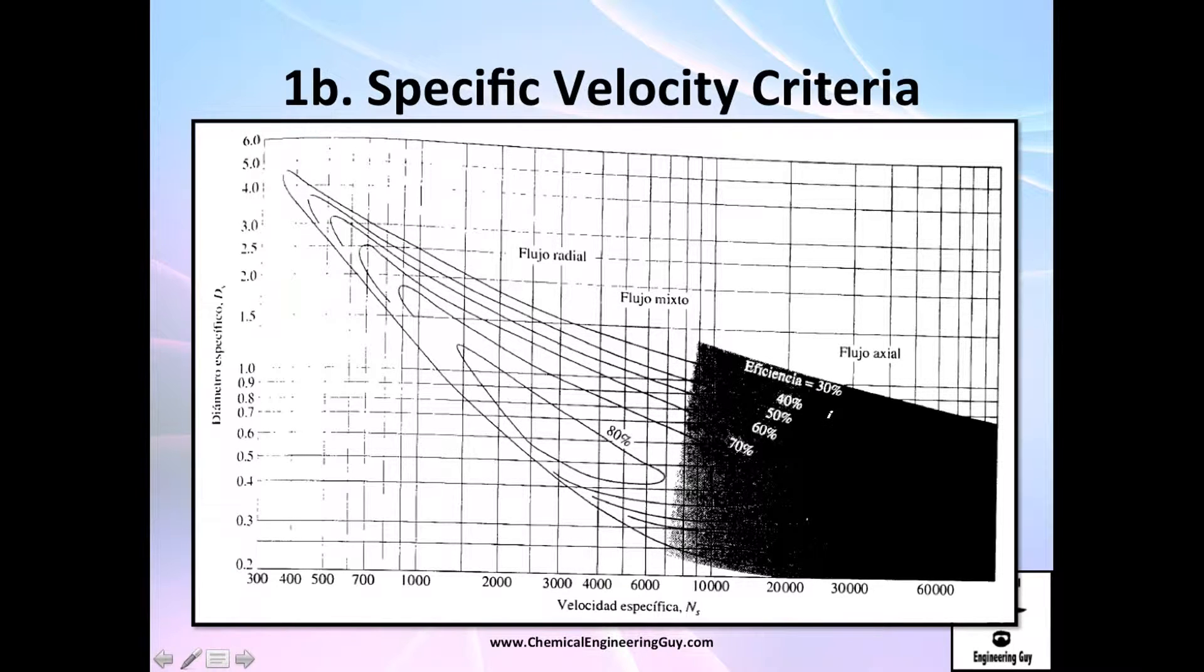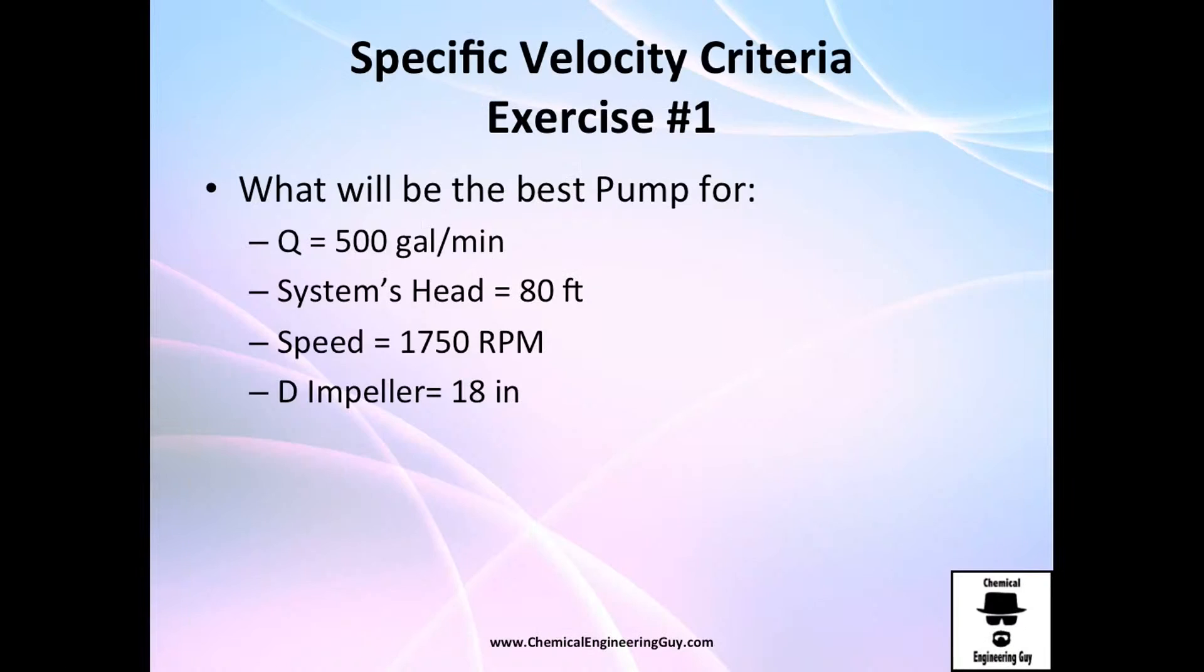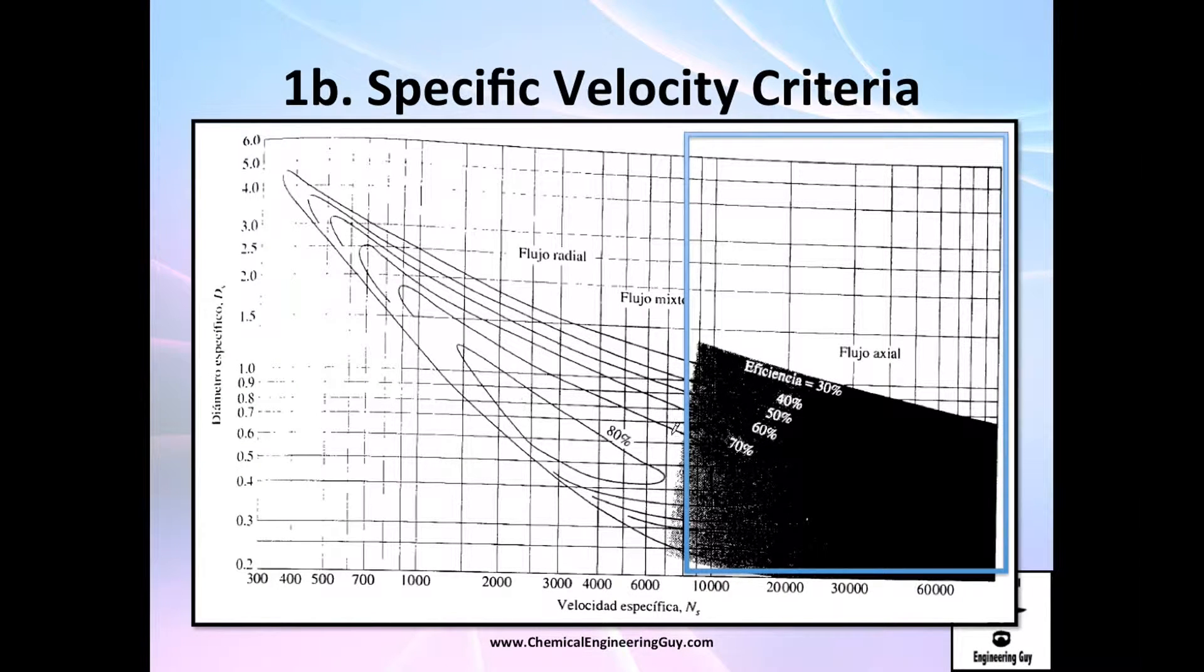So this is the graph I was telling you about. This is the specific velocity and the specific diameter. To the left, until 4000 Ns, you can find radial flow, which is centrifugal pump of course. Mix flow and axial flow. And we got the efficiencies right here.